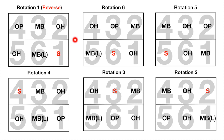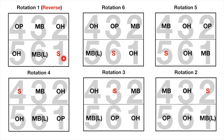In the next rotation, the setter rotates clockwise to position six, which makes that rotation six. In a similar fashion you have rotation five, four, three, two, and after rotation two it cycles back to rotation one.